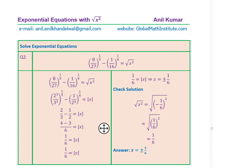Now with this in mind, here is the solution for the second question. This one is slightly changed with a negative sign in between, but the rest is very similar. Eight over 27 is written as 2 cubed over 3 cubed, one over 16 as one over 2 to the fourth. The square root of x squared is the absolute value of x. Simplifying the fractions gives one over six, so the answer is plus and minus one over six. You can verify that the negative value also works when you square it.